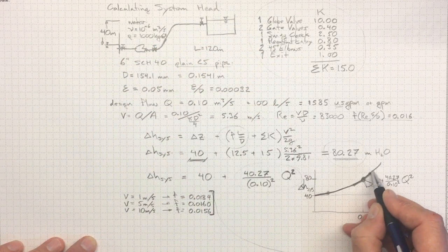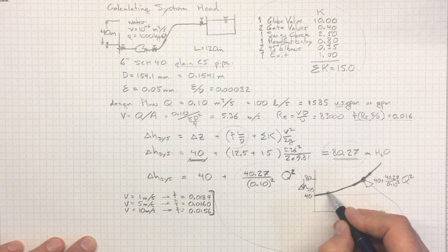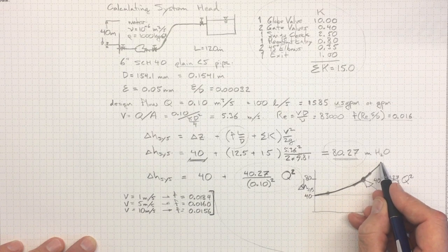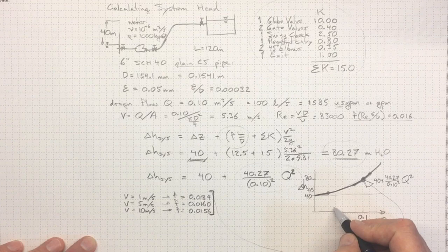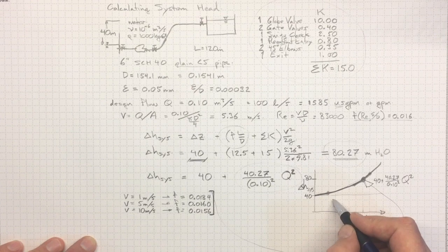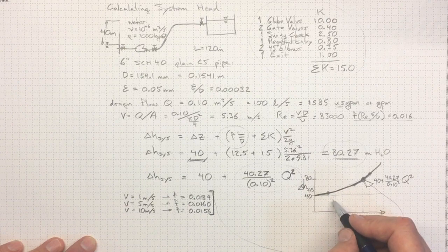So, somewhere along this curve, we're going to match up between what our piping system requires and what our pump can deliver. And that's where we're going to go next, is looking at what the pump can deliver and see where those two intersect.